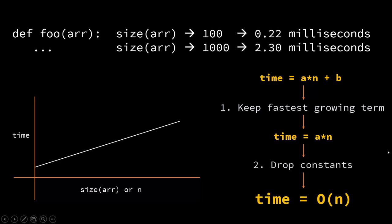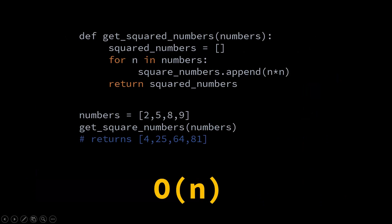The second rule is we drop any constants. So the constant is a and we drop it. So what is left is n, and now we say the Big O time complexity for this program is order of n. This is the example of a program whose time complexity is order of n.